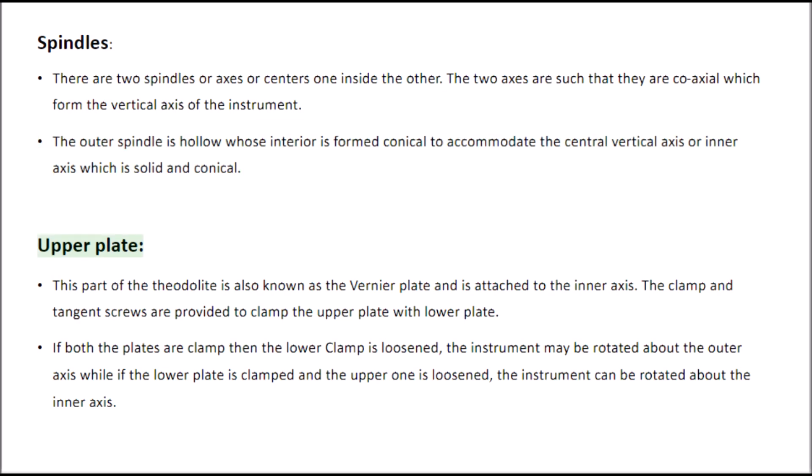Upper Plate. This part of the theodolite is also known as the vernier plate and is attached to the inner axis. The clamp and tangent screws are provided to clamp the upper plate with the lower plate. If both plates are clamped then the lower clamp is loosened, the instrument may be rotated about the outer axis. While if the lower plate is clamped and the upper one is loosened, the instrument can be rotated about the inner axis.